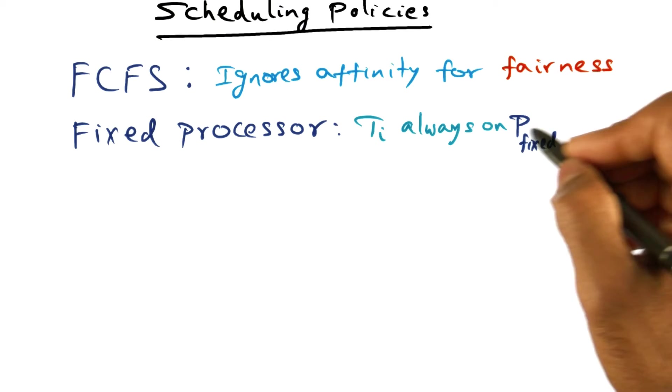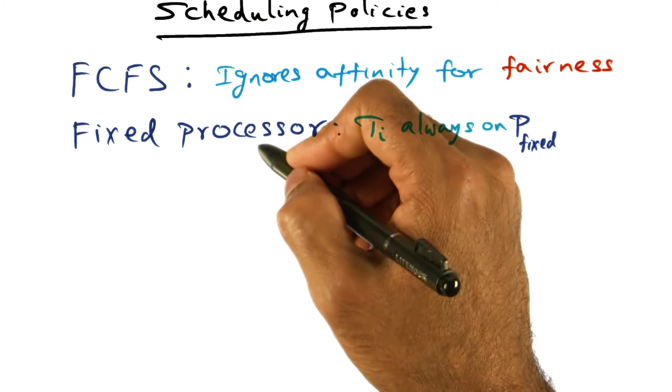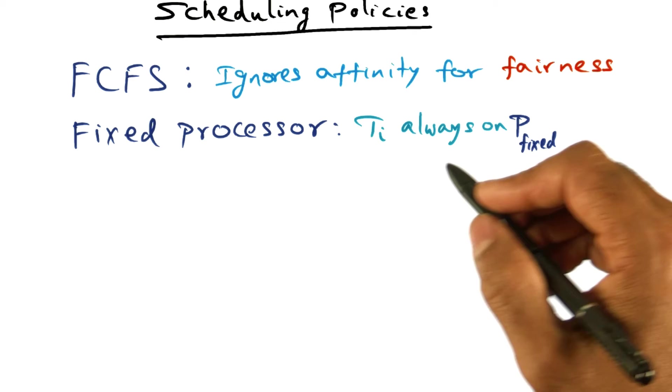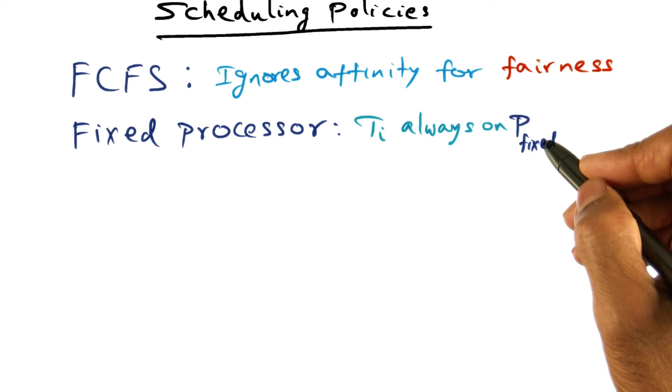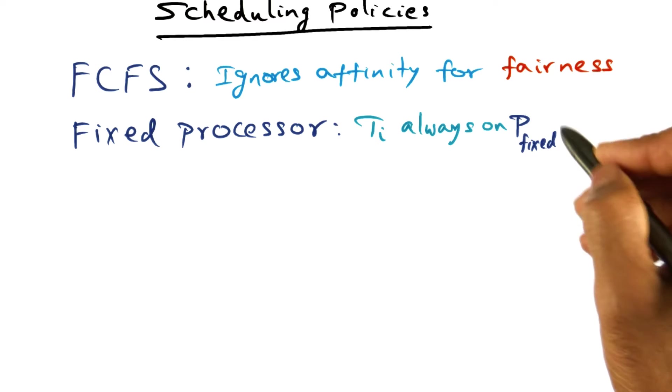The second scheduling policy is called Fixed Processor, or in other words, for every thread, when I schedule the thread the first time, I'm going to pick a particular processor and I'm always going to stick to that. So the processor on which TI will run will always be a particular fixed processor.